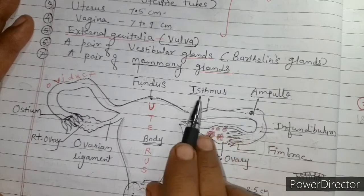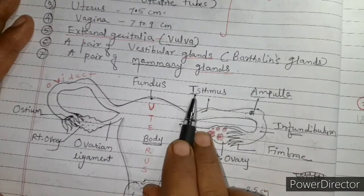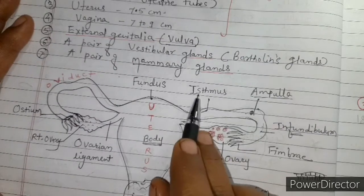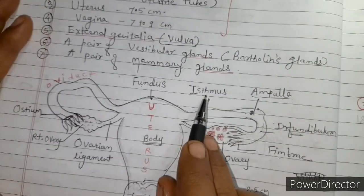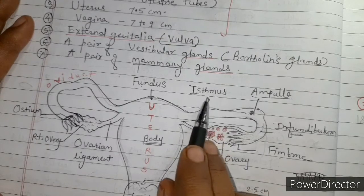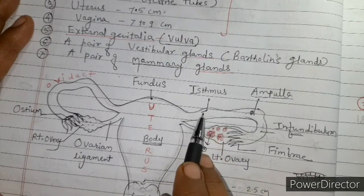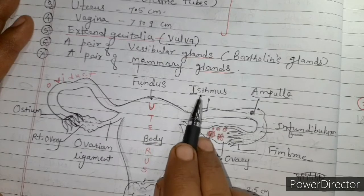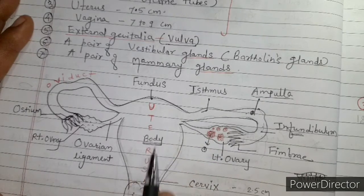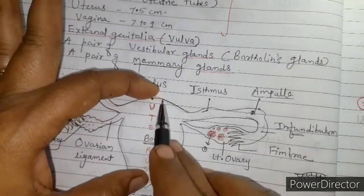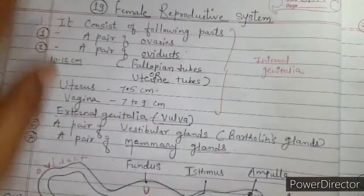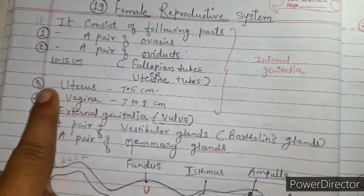The third part of the oviduct is called the isthmus. The isthmus is the distal inner part of the oviduct, and it opens into the uterus.